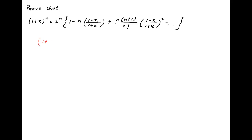Let's start by considering the expression 1 plus (1 minus x) upon (1 plus x). Taking a common denominator, this can be written as (1 plus x plus 1 minus x) divided by (1 plus x). x cancels in the numerator, and therefore this expression is equal to 2 divided by (1 plus x).